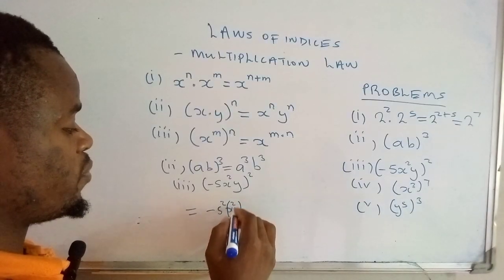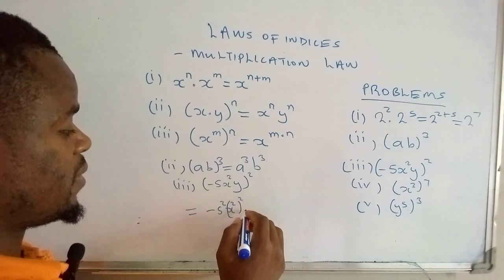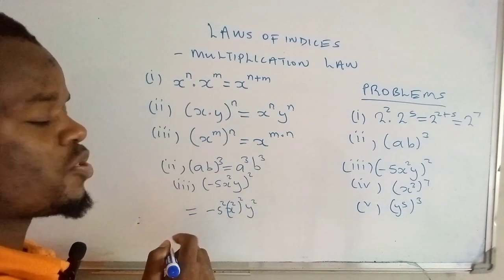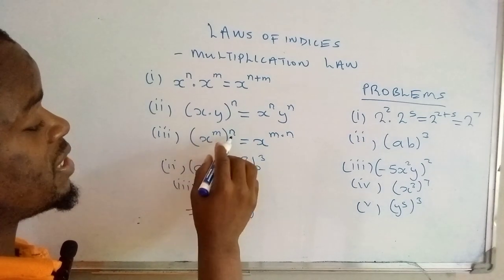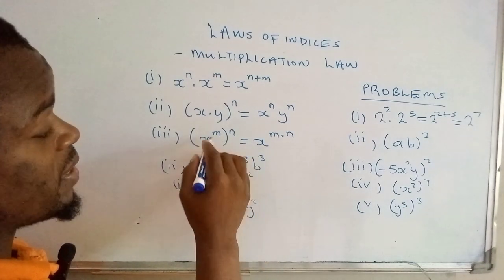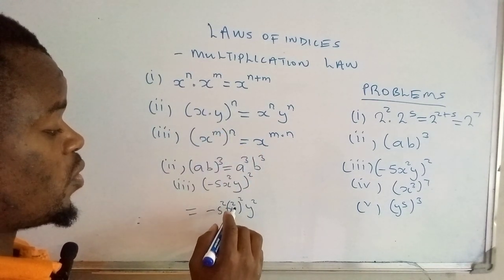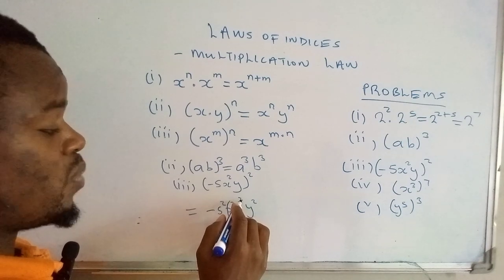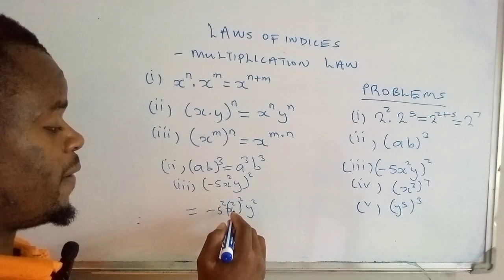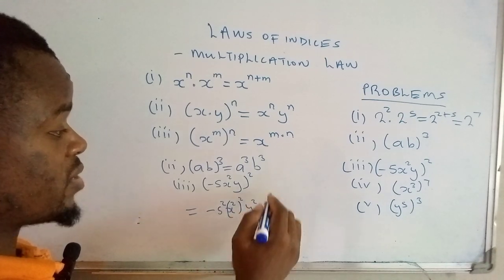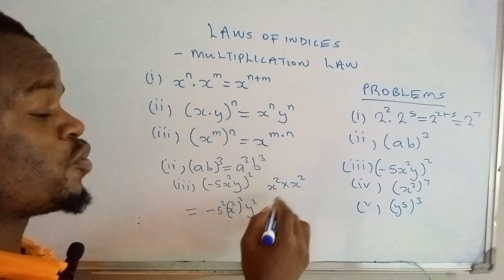We have y squared, we have y squared. This one here, the power actually counts the number of copies of the base. So we have x^2 times x^2, we have two copies. When you multiply them, we are going to apply the first rule: you write one base and then add the powers, which will give us x raised to the power 4.